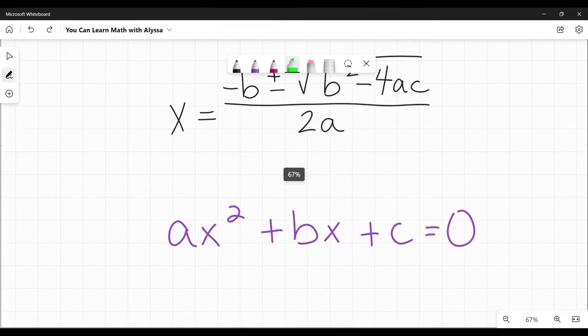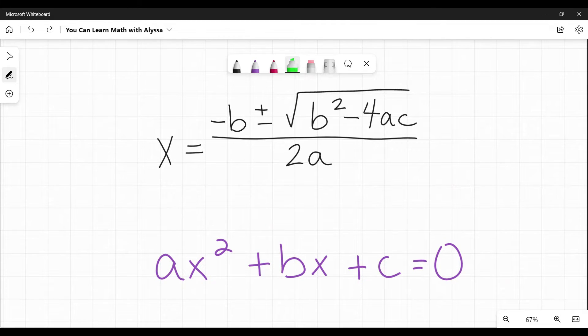You then plug it into the formula, which is x equals the opposite of or negative b plus or minus the square root of b squared minus four times a times c all over 2a. And again, using a, b, and c in that formula.